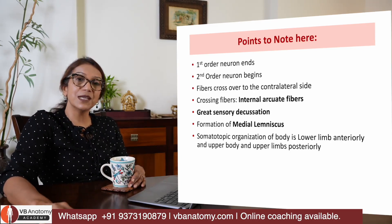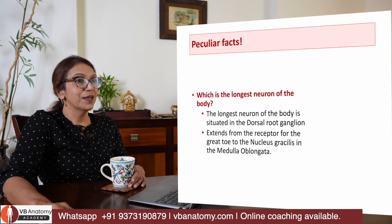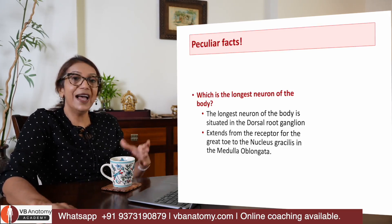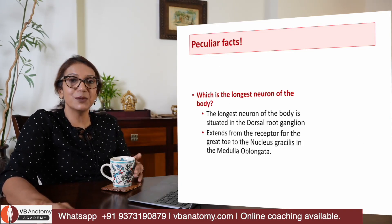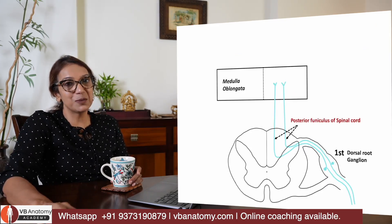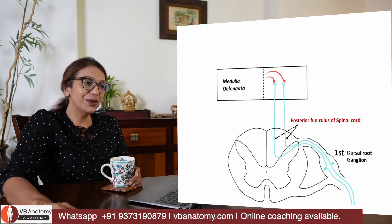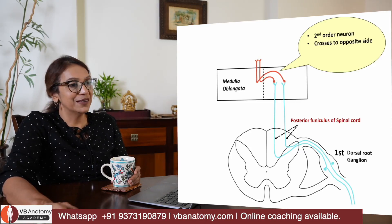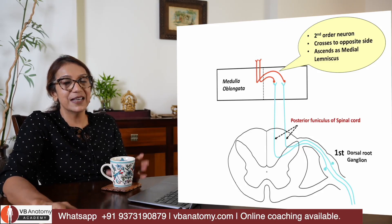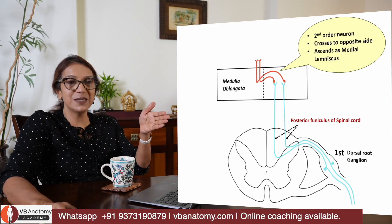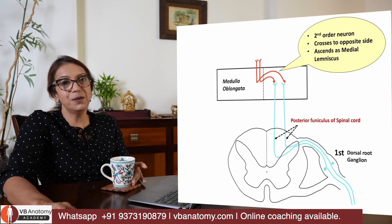The medial lemniscus begins to ascend upward. There is a peculiar fact about the longest neuron in the body — please look that up, as it comes as an MCQ and is a very fun fact. So the sensation has reached the medulla oblongata, the second order neuron has crossed over and is ascending. Two very important events: formation of the medial lemniscus, and crossing to the opposite side.